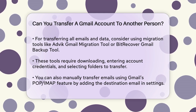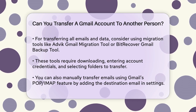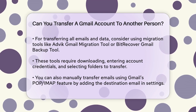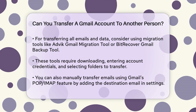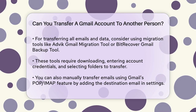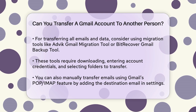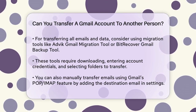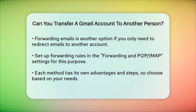Manual transfer using POP/IMAP. Another method involves using Gmail's POP/IMAP feature to transfer emails manually. Log in to your Gmail account and go to Settings. Select the Accounts and Import tab. Look for Check Mail from Other Accounts and add the email address of the account you want to transfer to. Select Import Emails from My Other Account (POP3) and follow the prompts to enter the necessary details. Once set up, your emails will be automatically transferred to the new account. This method can be a bit lengthy and may involve some technical steps, but it gets the job done.